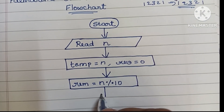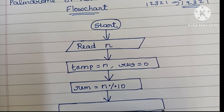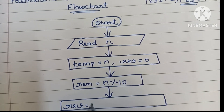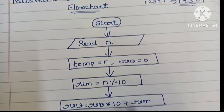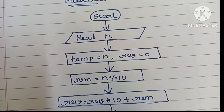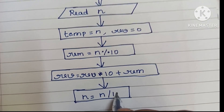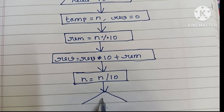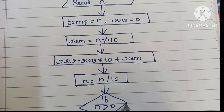We find the remainder: rem = n modulo 10. Next we find the reverse value using the formula: reverse = (reverse × 10) + rem. Then we update n: n = n divided by 10.